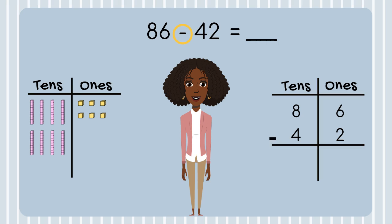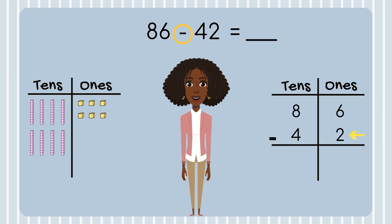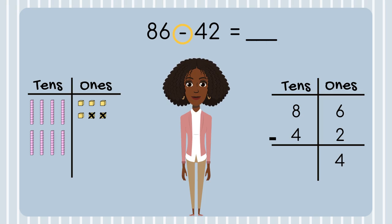Now I am ready to subtract. When I'm subtracting, it's important to always start in the ones place. In my ones place, I have 6. I need to take away 2. Now I have 4 ones left, so I will put a 4 in my ones place.